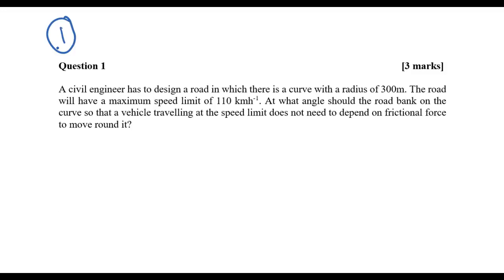When you look at the first question, you have a civil engineer has to design a road in which there is a curve with radius 300 meters. The road will have a maximum speed limit of 110 kilometers per hour. At what angle should the road bank on the curve so that the vehicle traveling at speed limit does not depend on the frictional force? A very important keyword: no frictional force and it's a banked curve.